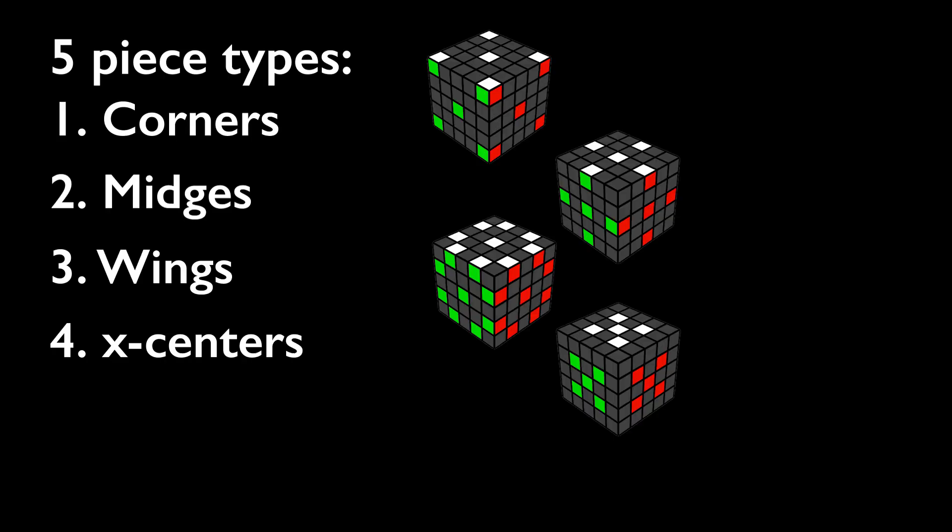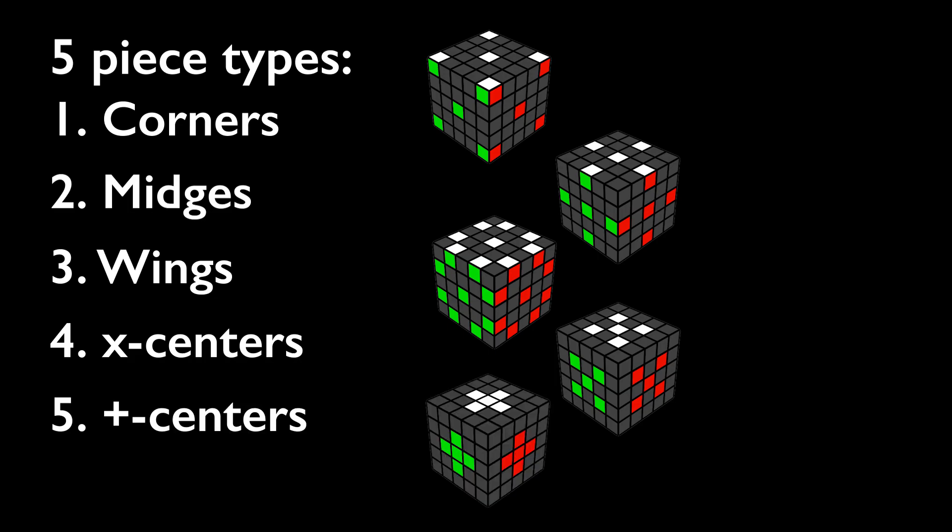A 5x5 has five different piece types: corners, midges, wings, X-centers, and plus centers. A 4x4 only has corners, wings, and X-centers, so the only new pieces are midges and plus centers.